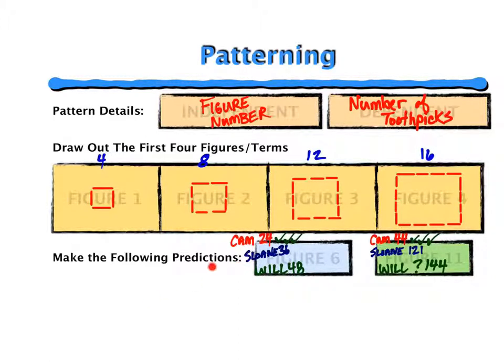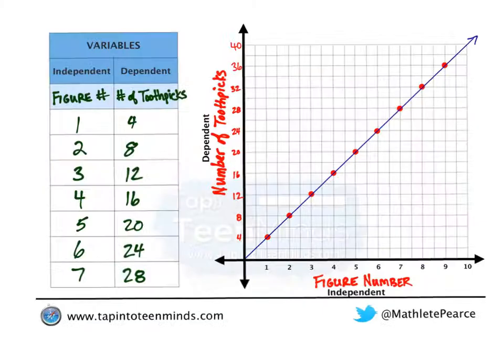At this point we had students make predictions for figure 6 and figure 11. Lots of folks were picking 24 for figure 6 and 44 for figure 11. We then took our information, our figure number being the independent variable and dependent variable being the number of toothpicks, and we tabulated them in a table and followed it up with a graph, noting that our independent causes the dependent to change.